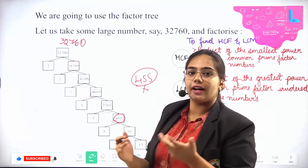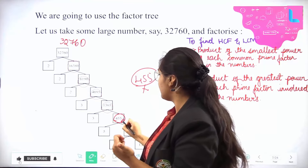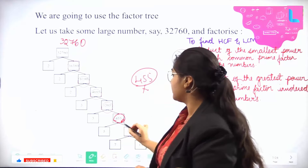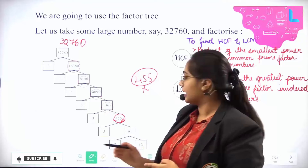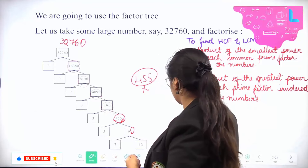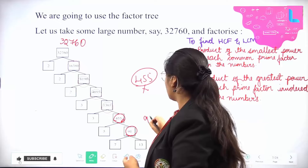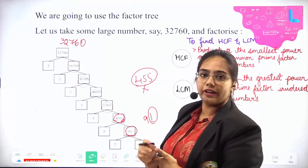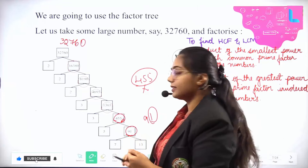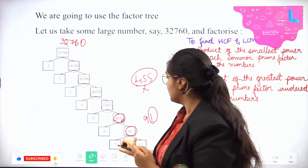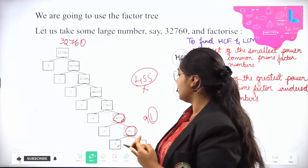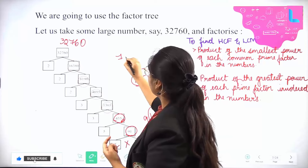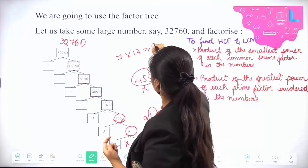We've checked 2 and 3 for 455. The next factor to try is 5. Since the last digit is 5, it is divisible by 5: 5 × 91 = 455. Now check 91: the last digit is not 5 or 0, so it is not divisible by 5. And 3 is also not applicable. The next prime factor to try is 7: 7 × 13 = 91.